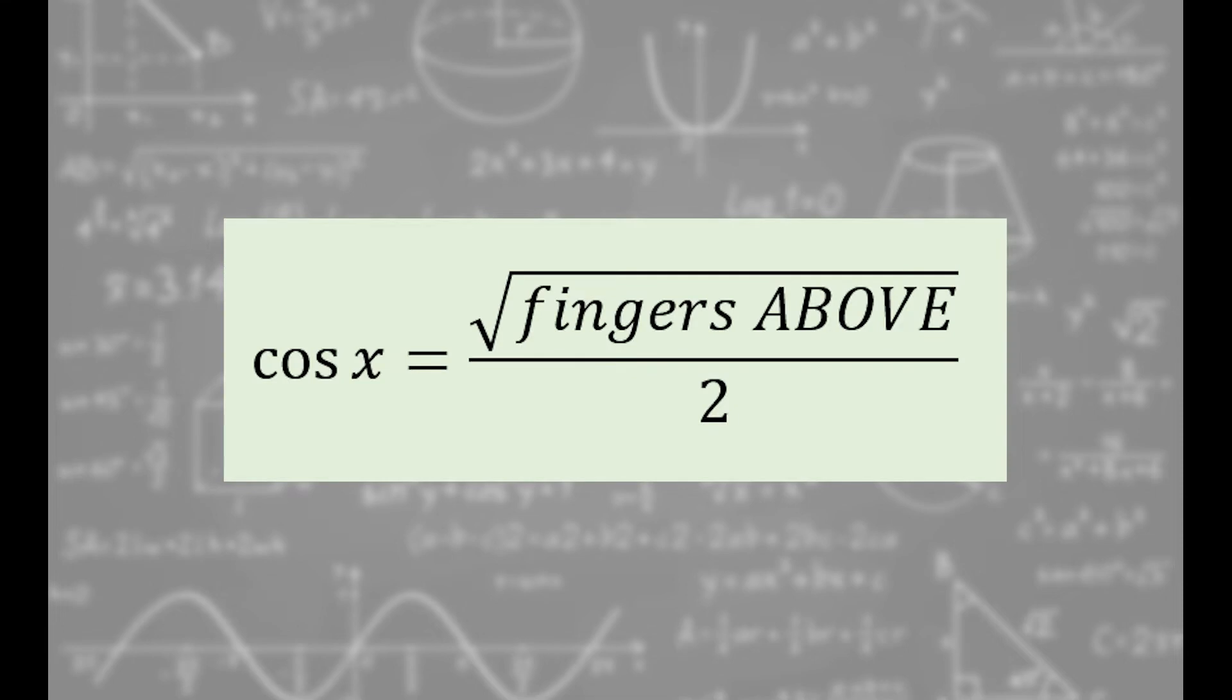All right, now cosine. Cosine works the same way, but you count the fingers above. Cosine equals square root of fingers above the whole thing divided by 2.